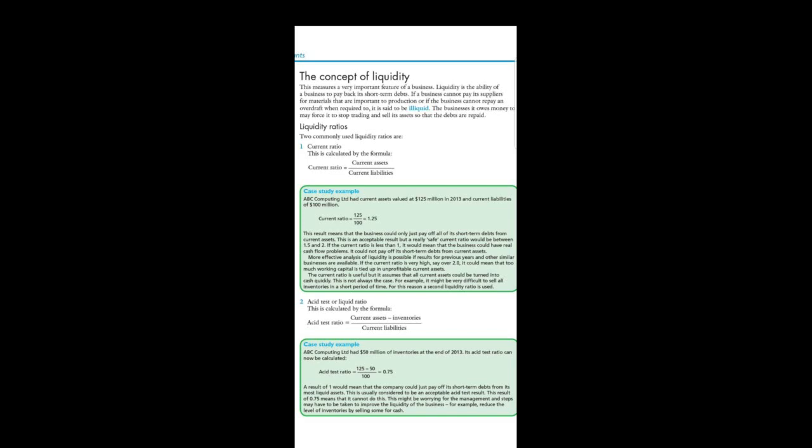For liquidity ratios, you must interpret the values. A current ratio of 1.25 means the business can only just pay its short-term debts, while 1.5 to 2 is the safe range. For the acid test ratio, if the result is 0.75, the business cannot pay its short-term debts from its most liquid assets — it should be 1 or above.